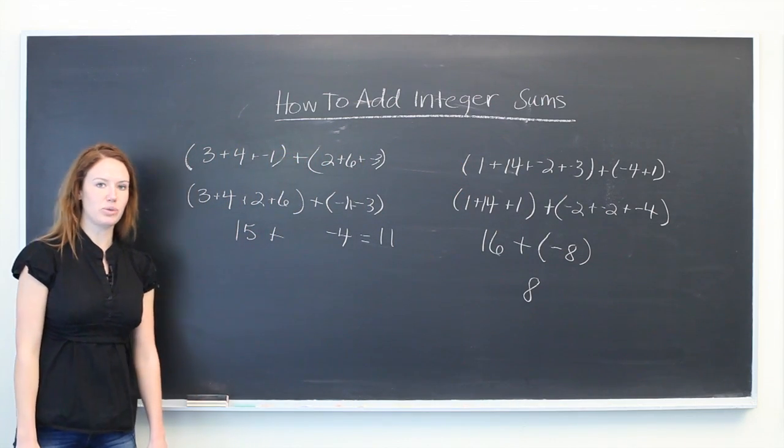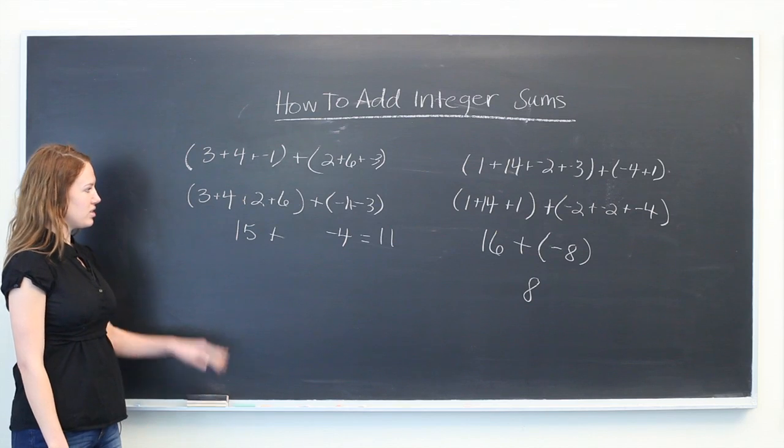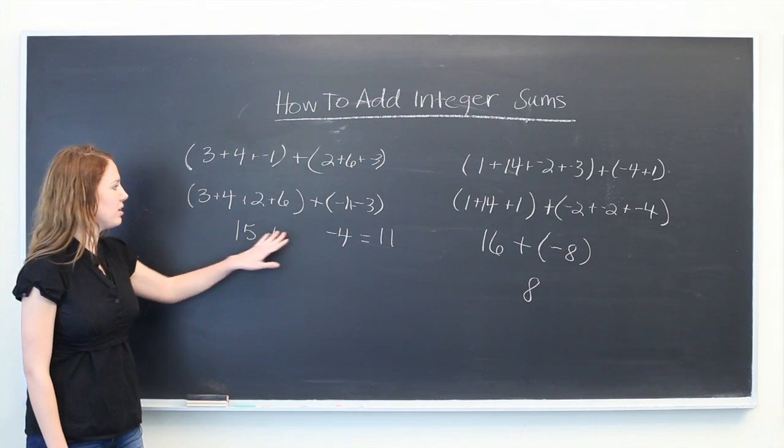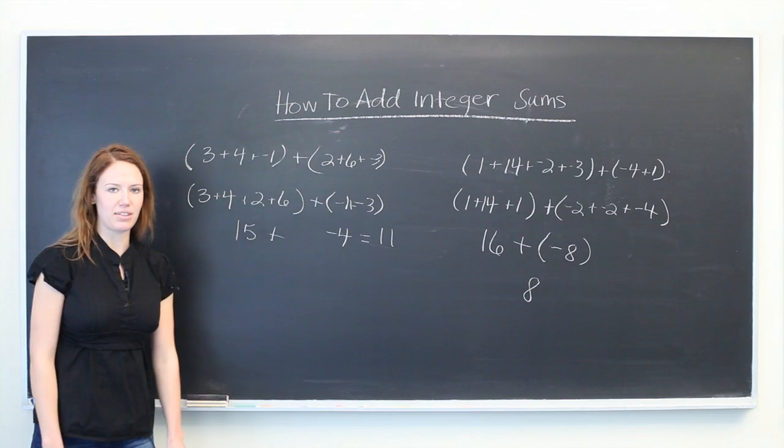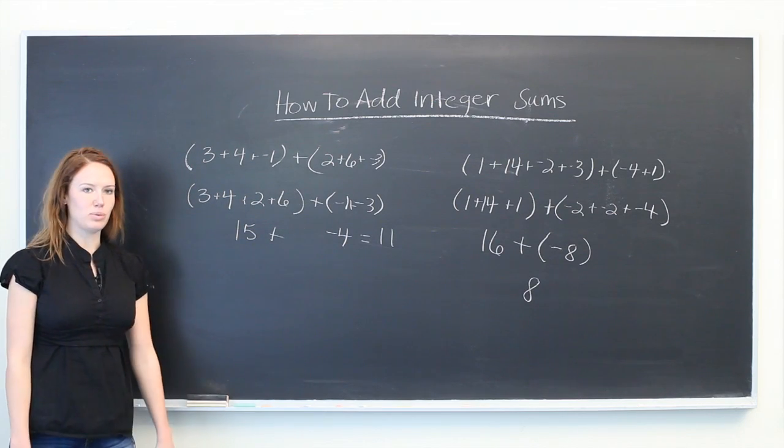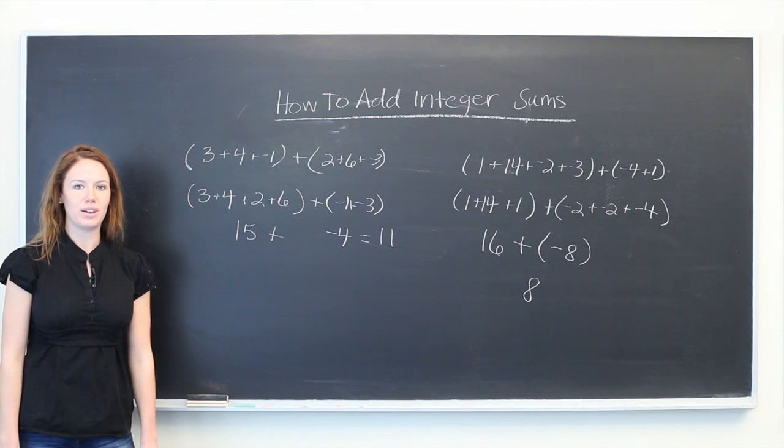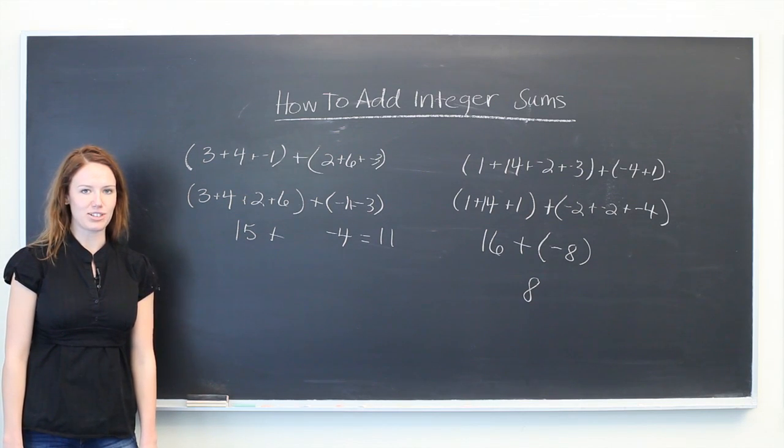So again, the steps to adding integer sums is to regroup them where you have all the positives added together and all the negative integers added together. This will help you more easily solve your set of two addition problems. Thanks for watching.